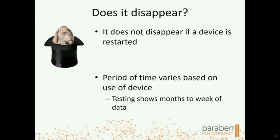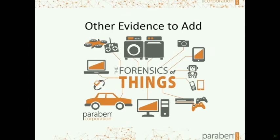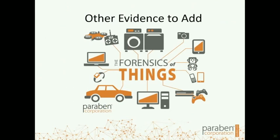It does not disappear if the device is restarted. The period of time retained will vary from device to device based on how much use that device has had — a heavily used device will yield less information in the activity timeline than a lightly used device. You can get up to months and weeks of information. We can also go to the forensics of things to find additional information that might help in a vehicle investigation.